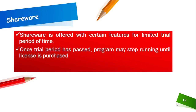Once the trial period has passed, the program may stop running until a license is purchased. You can download these softwares for a limited period of time, like a 30-day trial period. After the trial period is over, the software may stop running and the owner may ask you to purchase the license. If you do not buy the license, these programs may stop running.